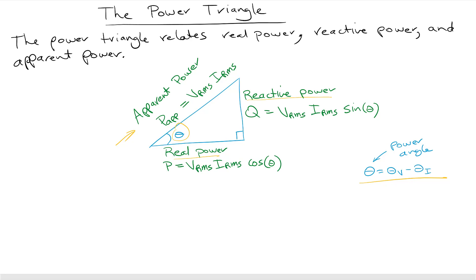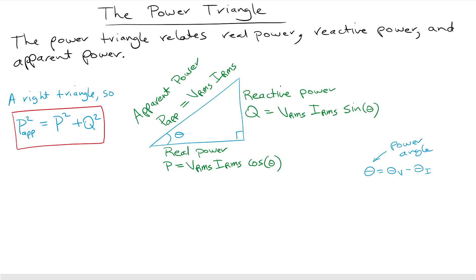This is a triangle and we have the relationships for Q, which is the symbol for reactive power. Q is the hypotenuse times sine of theta, and real power is the hypotenuse times cosine of theta. Since it's a right triangle, Pythagoras applies: the square of the apparent power equals the square of the real power plus the square of the reactive power.